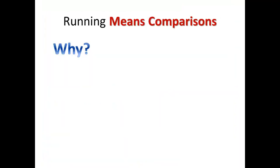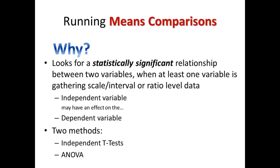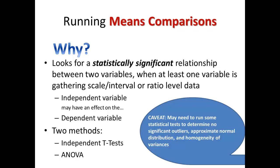Why would you want to run means comparisons? Means comparisons look for statistically significant differences between two variables when at least one of those variables is gathering scale or interval level or ratio level data. When you were running cross-tabulation tables, you were comparing questions where both of the variables were gathering nominal or categorical level data. So again, you need to be concerned about what the independent variables are and the dependent variables, and there's two methods that you can use, the independent T-tests and the ANOVA.